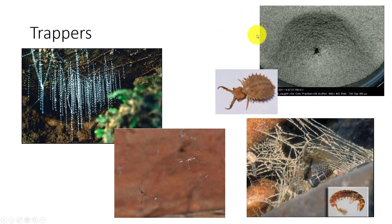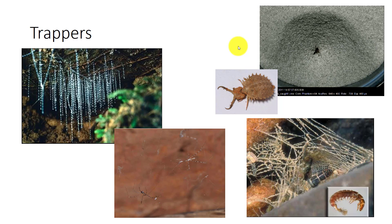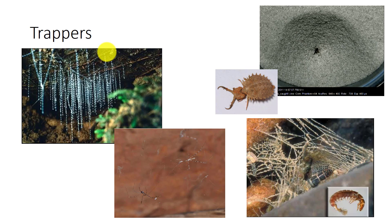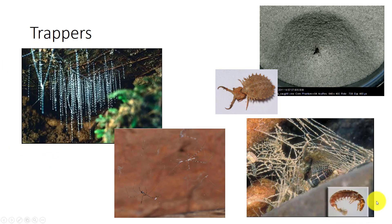Antlion larvae are the classic example — they use conical pit traps to ambush prey, and must locate, construct, and maintain these traps to effectively capture prey. Larvae of the glowworm, a type of gnat, live in moist caves and spin slimy webs that dangle from the ceiling. The larvae are bioluminescent, attracting prey into the web. Some forms of this gnat produce a web that is not only sticky but contains toxic chemicals. Hydropsychid caddisfly larvae also construct nets in which to trap prey.